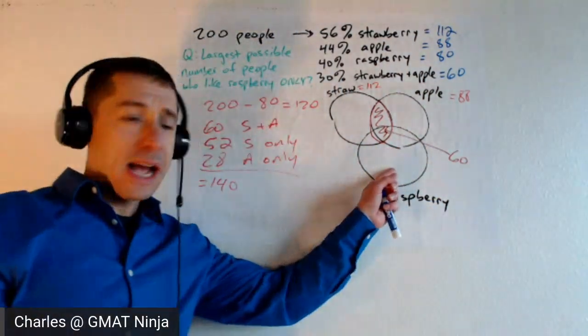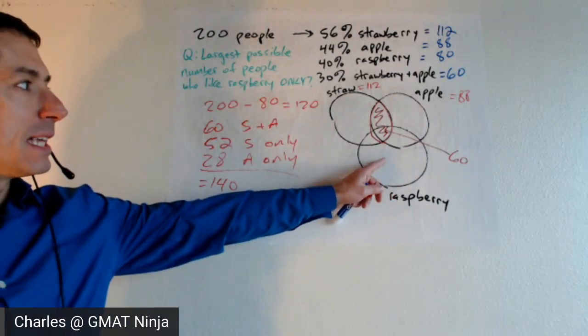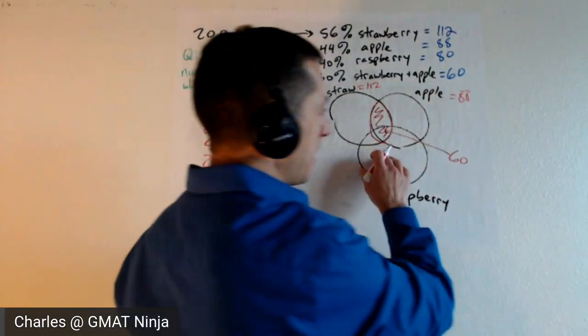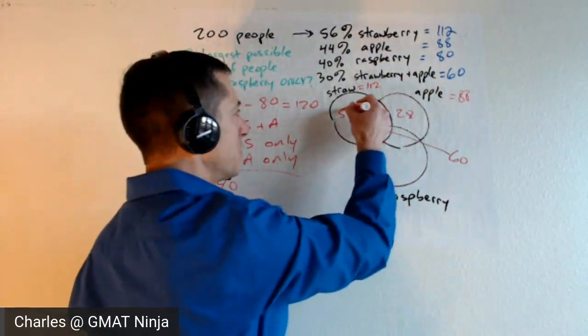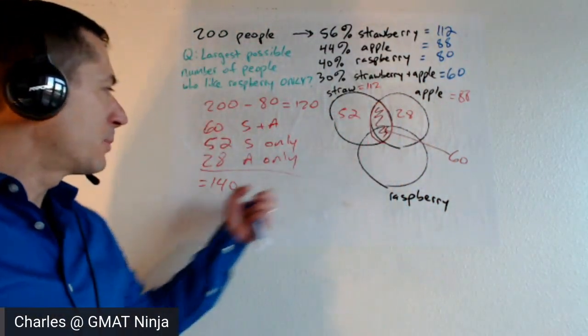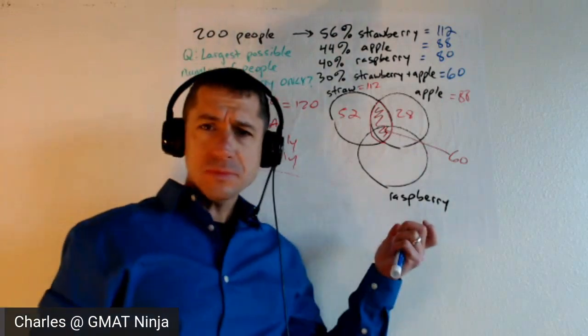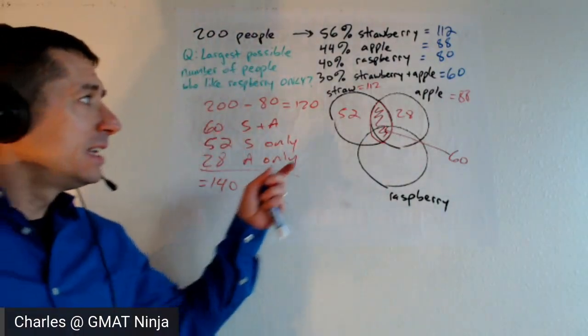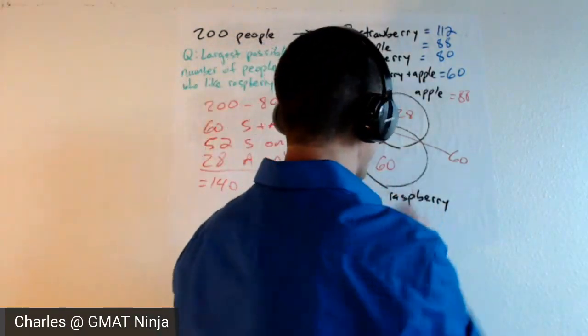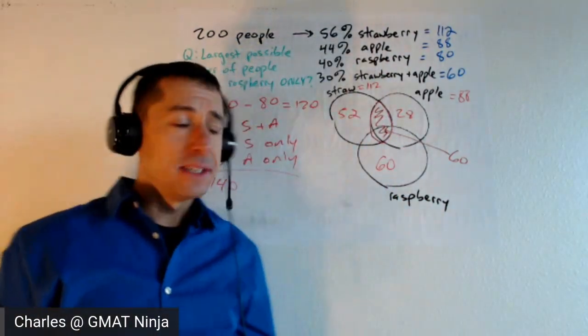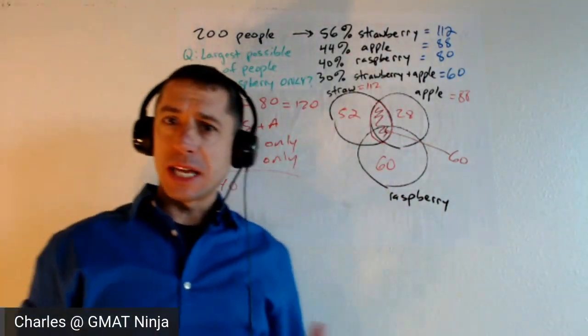So if we're trying to figure out what's the largest number of people here, then at bare minimum, we've got another 28 over in this chunk. We've got another 52 over here. That's going to add up to 140 people. So there's that number again. And what does that tell us? Max, we get 60 right here that like raspberry only. And there's your cleanest solution and you get an answer of B.